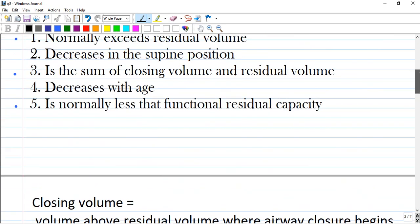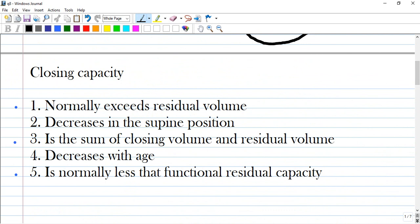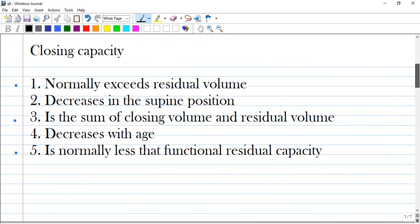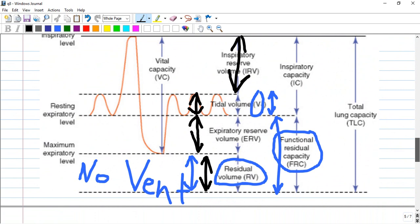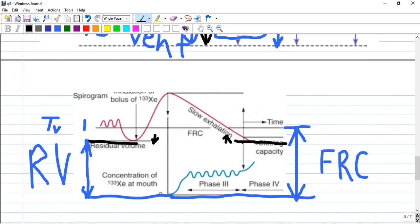So going back to answers. Normally exceeds residual volume - yes it exceeds. As you see, a little bit higher, situated up to the residual volume closing capacity. Is that volume that is close to closing the alveoli.